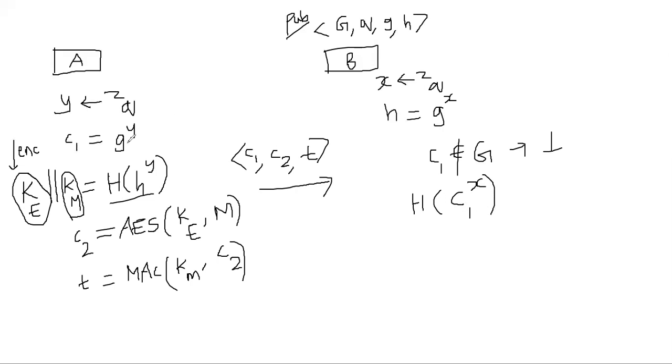C1 power X is nothing but G power XY, because C1 is nothing but G power Y. So it's G power XY. And this is exactly what Alice also computed. H is nothing but G power X. So G power XY. So both of them have the same KE and the MAC key. Such a H exists, we are assuming. I'll talk about properties of H in a moment. But assume for now such a H exists.